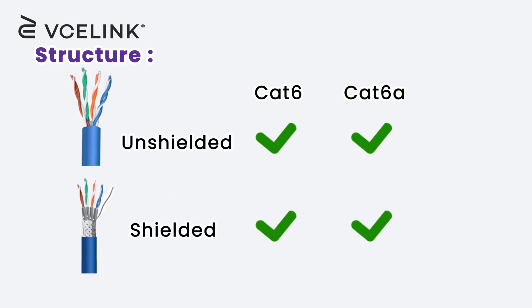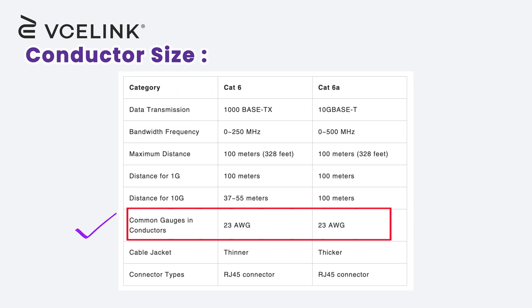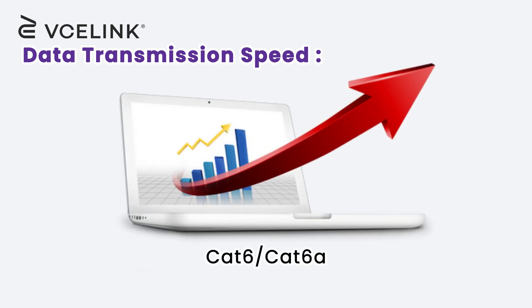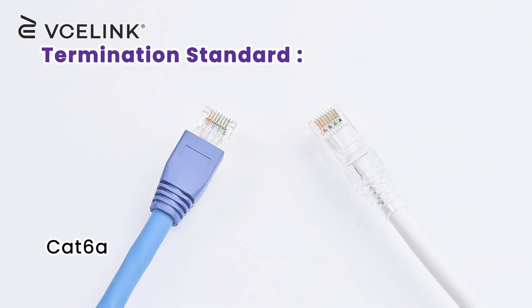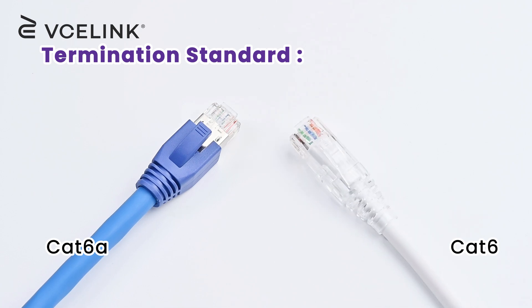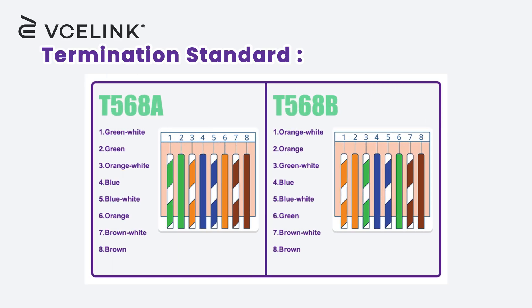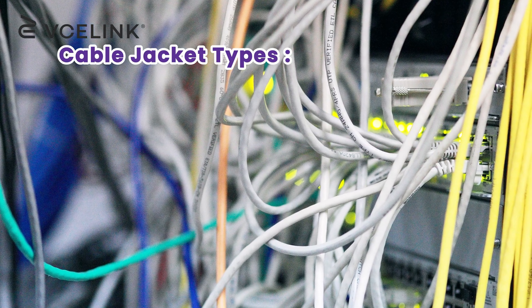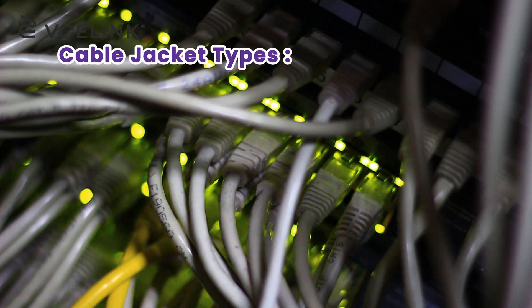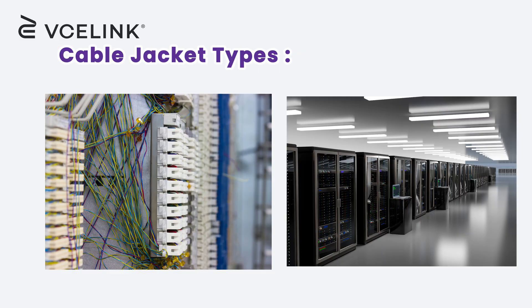Both CAT 6 and CAT 6A cables can be unshielded or shielded and feature eight copper wires twisted into four pairs. Most CAT 6 and CAT 6A cables on the market typically use 23 AWG conductors. Both support 1000 megabits per second up to 100 meters, and both can be terminated according to the T568A or T568B wiring scheme. Their cable jackets can also be customized for different applications such as outdoor use or plenum space applications.